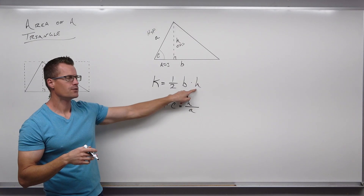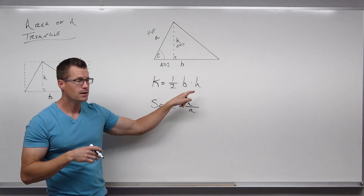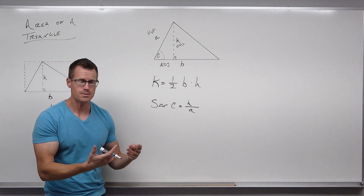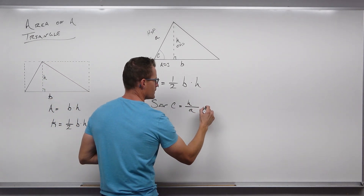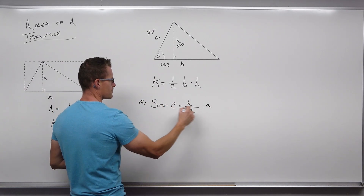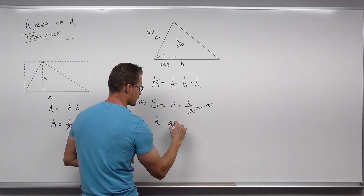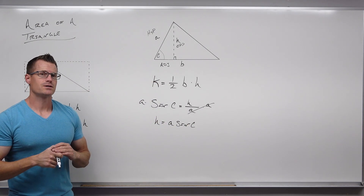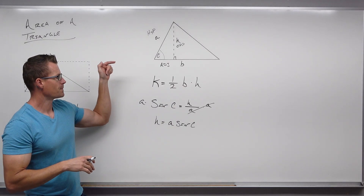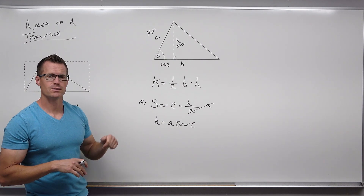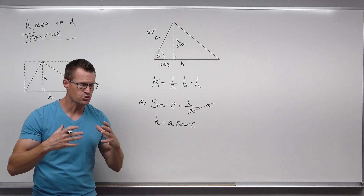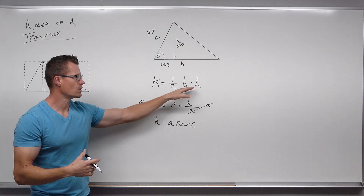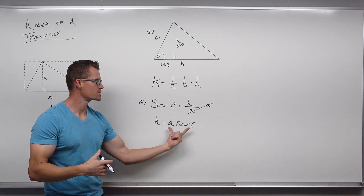We don't want to use the adjacent side because we don't know it. Knowing two sides and an angle between gives us that angle and the hypotenuse, but not the height. That's the whole point: if we don't know the height, finding the area is difficult. But if we know the angle and that side, we can solve for height and substitute. Multiply both sides by A: the height equals A, the hypotenuse, times sine of angle C.